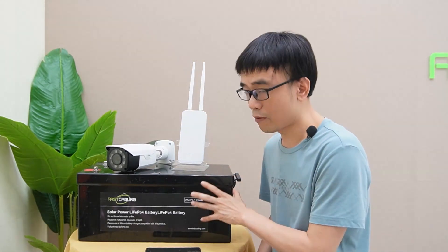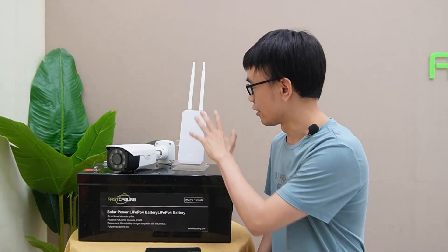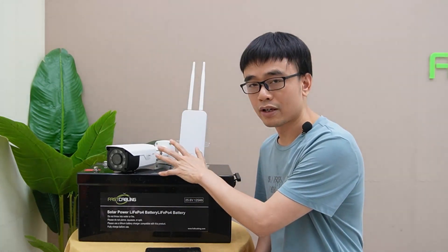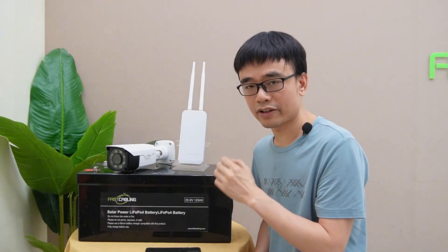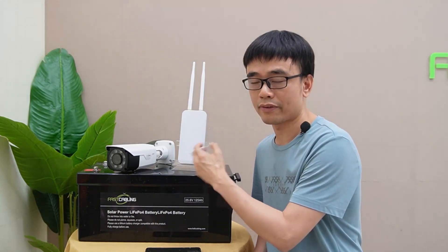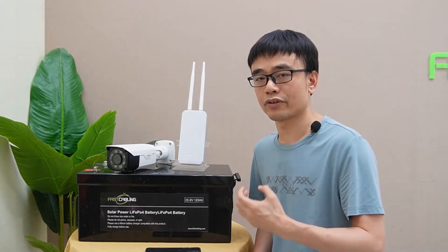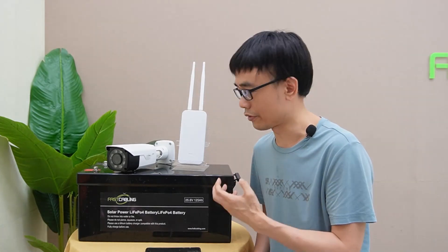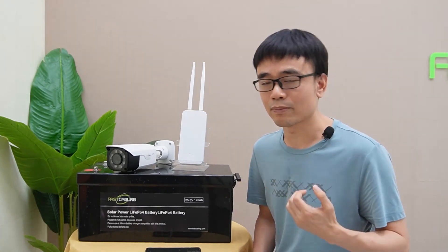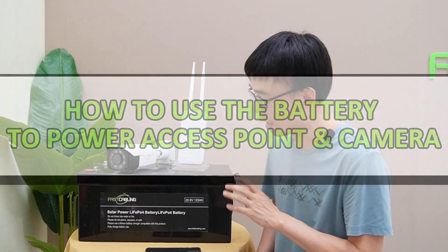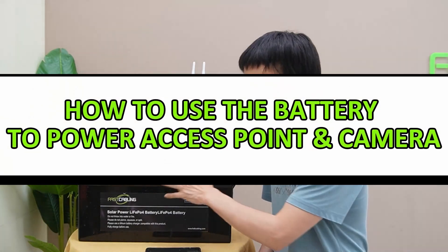You can set several batteries, each one comes with an access point or camera, then provide power for these two devices. Then use the fiber optic cable to connect each device back to the control, or even use point-to-point wireless bridges to connect each device back to the control. Now let's move to the demonstration board and see how we can use this battery to power these two devices.